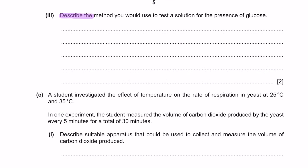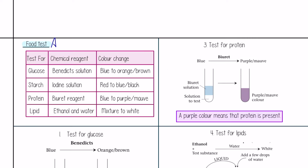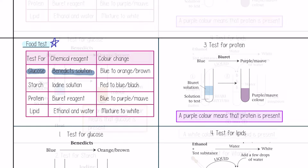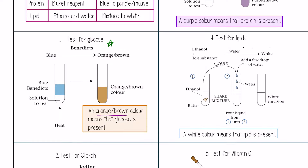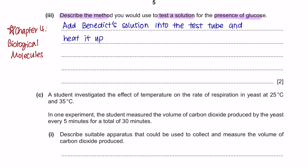Part 3: Describe the method you would use to test the solution for the presence of glucose. This tests you on Chapter 4, Biological Molecules. To test for glucose, use a chemical reagent called Benedict's solution. Add the Benedict's solution into the solution being tested and then heat it up. If glucose is present, the solution will turn orange or brown. Since you are given two marks, mentioning adding Benedict's solution gives the first mark and heating it up gives the second mark.